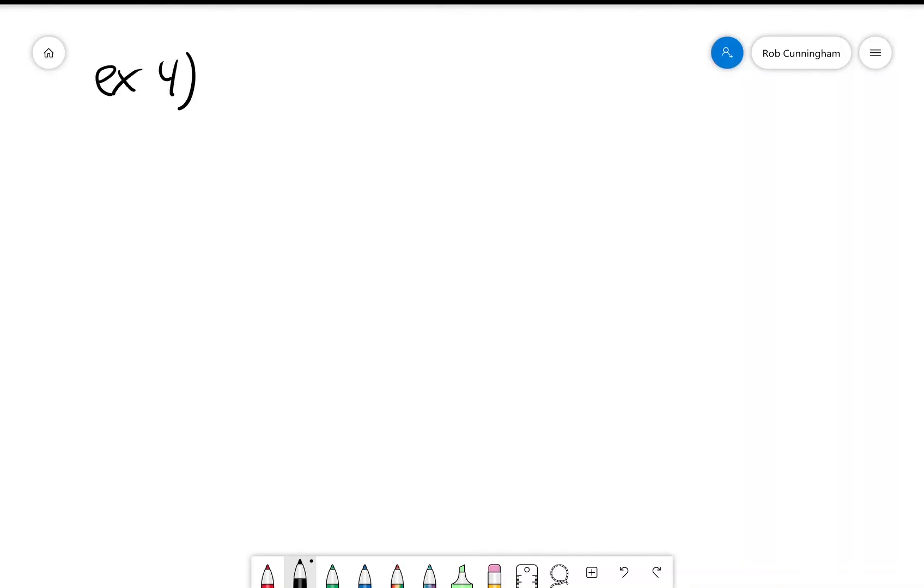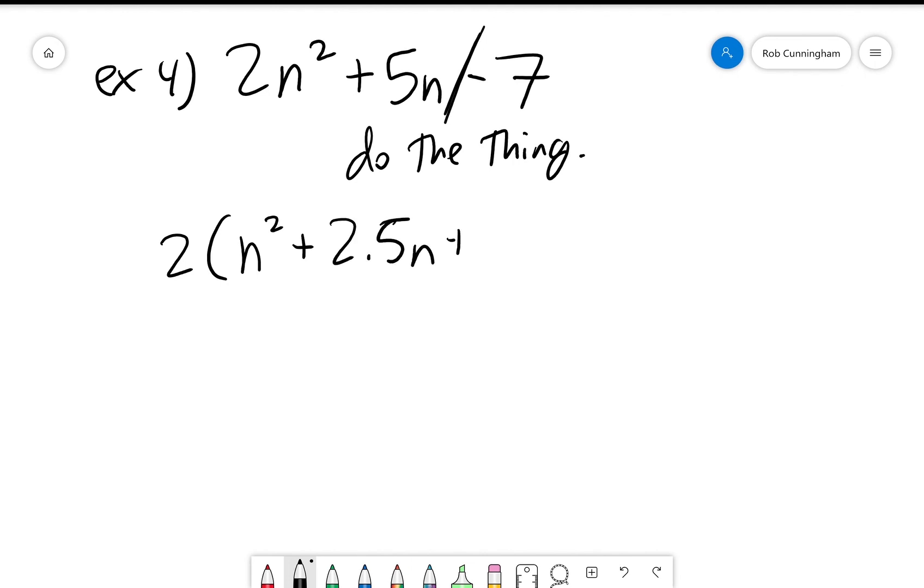Example 4: 2n squared plus 5n minus 7. So looking at this problem, the first thing I notice is how much easier it would be to put this into factored form. Unfortunately, that's not what we're doing—we're putting it into vertex form, which is going to be a whole lot less fun. So again, the negative 7 we're going to section off for a moment, and this is going to be 2 times n squared plus—what's 5 divided by 2?—2.5n plus blank minus 7.